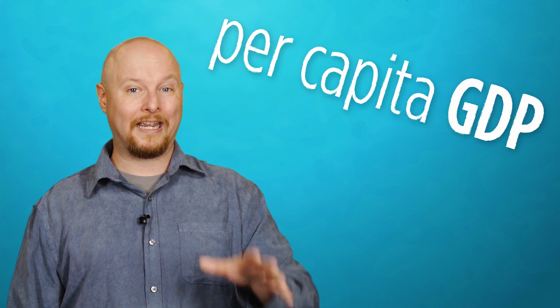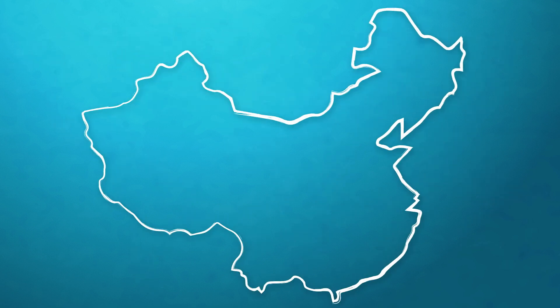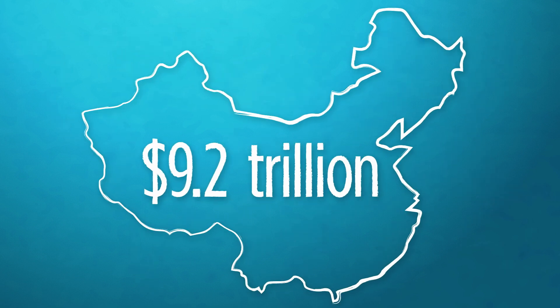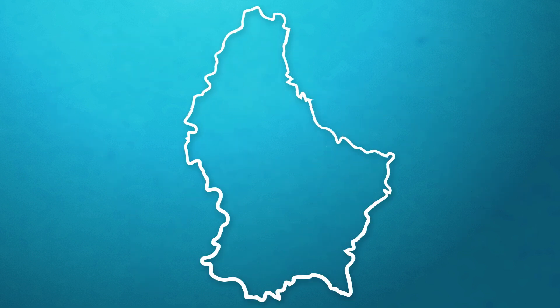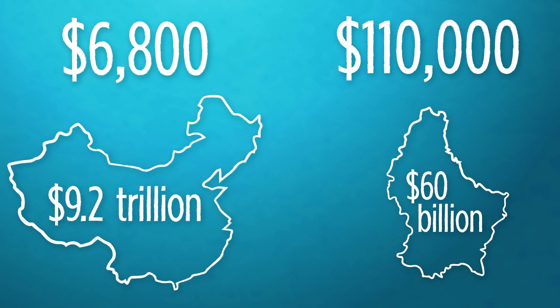A simple example would be comparing GDP with population to come up with per capita GDP, which means economic value per person. So according to the World Bank, in 2013, China's GDP was a massive $9.2 trillion. Compare that to Luxembourg's relatively small GDP of $60 billion, yet in that same year, China's GDP per capita was only about $6,800, while Luxembourg's was more than 16 times that at about $110,000. So while China's economy is certainly much larger, it looks like each individual citizen on average is better off in Luxembourg, financially speaking, that is.